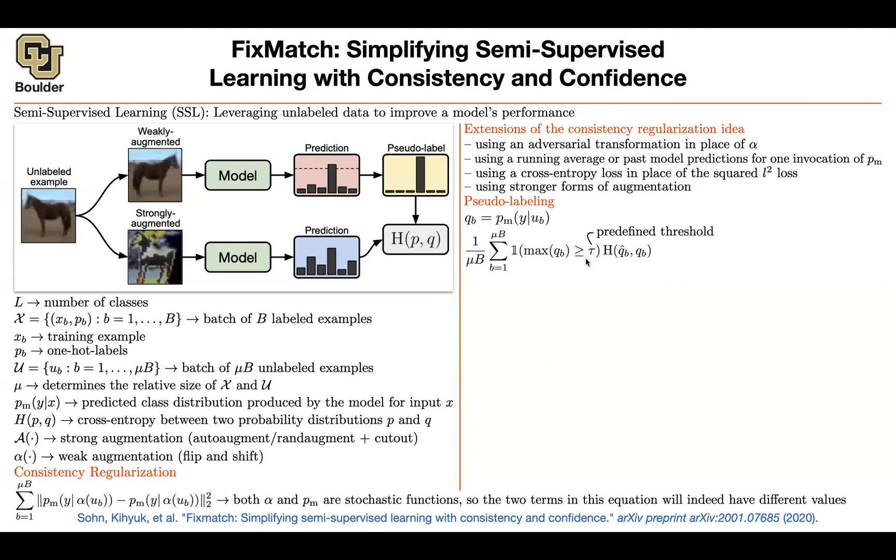What is q_hat_b? You're going to do the argmax of q_b, your probabilities. This is q_b, which is a probability distribution, and then q_hat_b is this one-hot encoded version. Pseudo labeling is related to encouraging the model predictions to have a low entropy or high confidence on your unlabeled data.